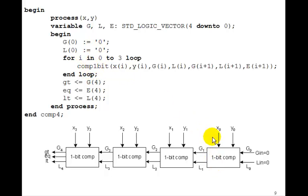So the first time through, we made this component. Next time through, i is equal to 1. So the inputs are x1, y1, g1, and l1. And the outputs are g2, l2, and e2. The e2 doesn't get connected.